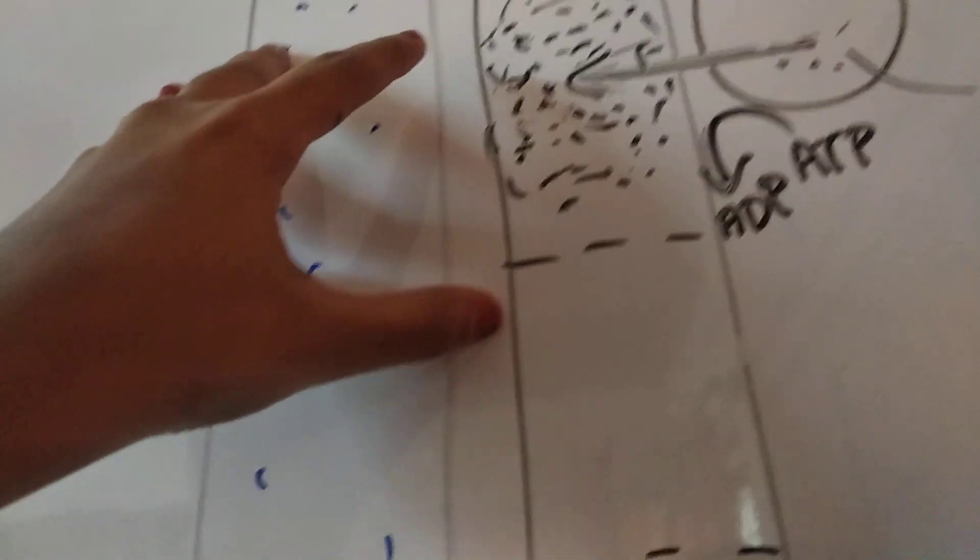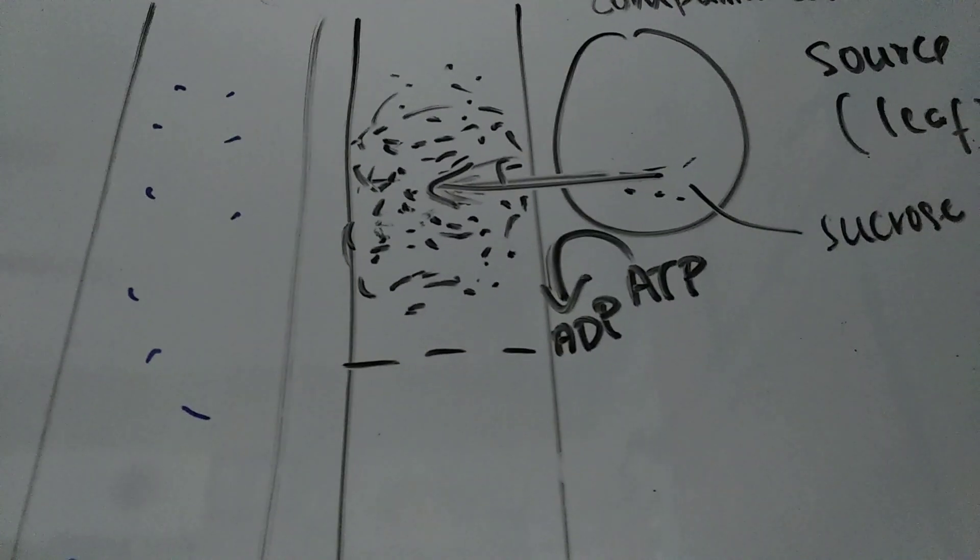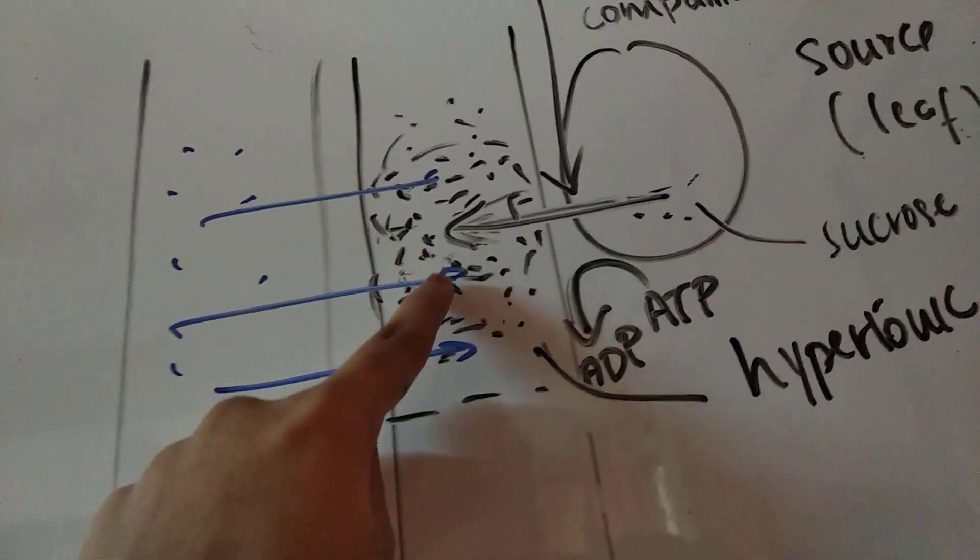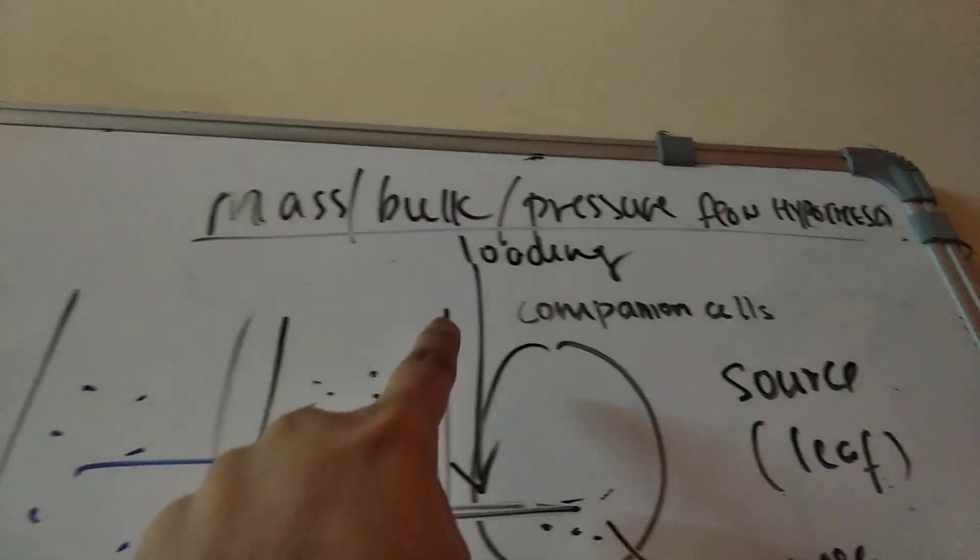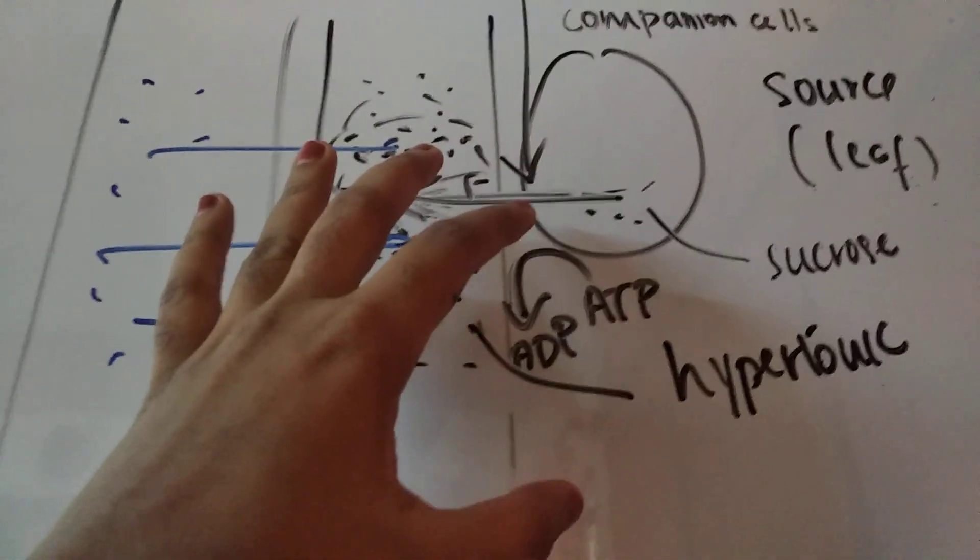So there's a lot of water concentration here and no water concentration here, so it has to move from here to here. I've written that this is a hypertonic solution. This process is known as loading. And now water from the xylem is entering the phloem.